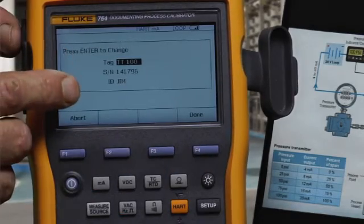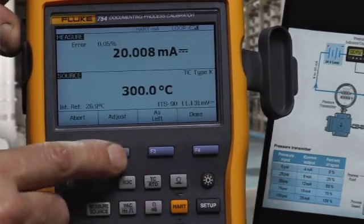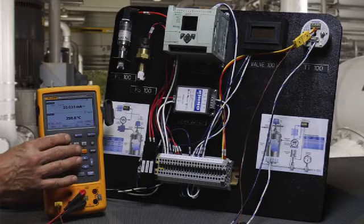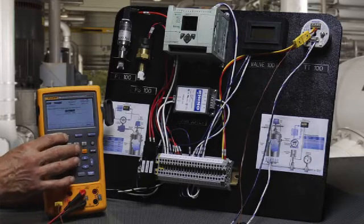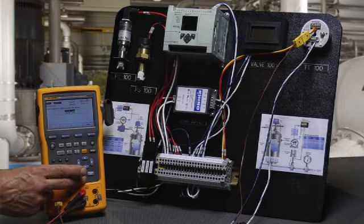Tag, serial number, and the ID of the person doing the work are recorded. In the event that the test had failed, we could select adjust and perform the output trim and sensor trim on the smart transmitter.